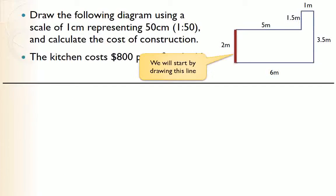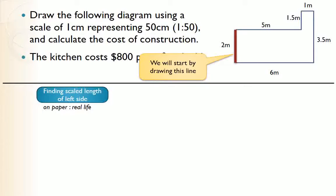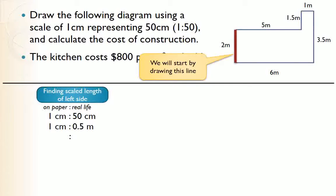We'll start by finding the scaled length of the left side. When we write a scale, the first part is the measurement on paper and the second part is the real-life measurement. So one centimeter on paper represents 50 centimeters in real life. The second line puts the real-life part in meters — 50 centimeters is the same as 0.5 meters — because our diagram measurements are in meters, while we measure on paper with a ruler in centimeters.